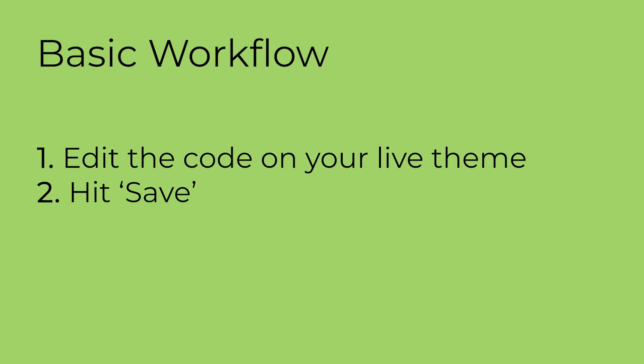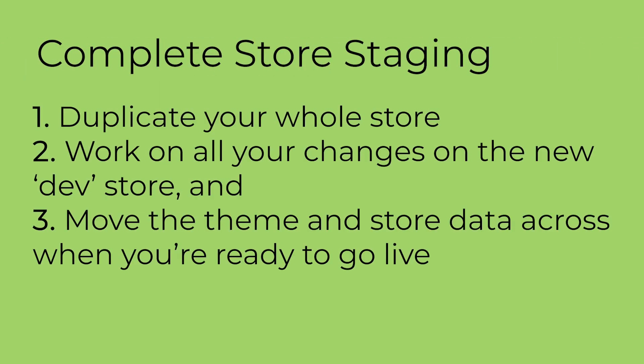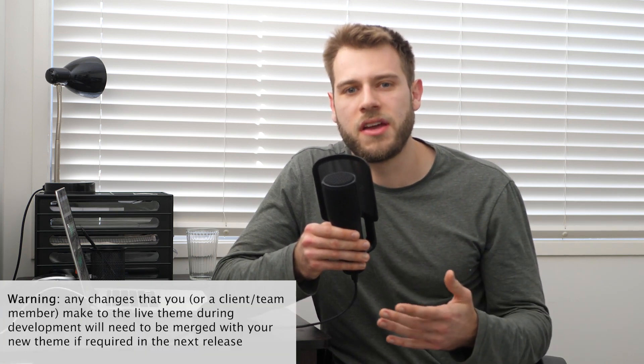One: you can simply make the change. If it's a snippet of code, insert it. If it's a new page, write it and hit publish when ready. This is the basic workflow. Second: you can stage your theme code — take your live theme, duplicate it, and work on the new version in private. Finally: you can create a whole new store, duplicate your store data onto it, work on all your changes there, and then move the new theme and any store data modifications to your live store when ready. In my experience, the second option has become common practice, and for most people — besides very basic code changes — this is the process you should be taking when staging your theme code changes.